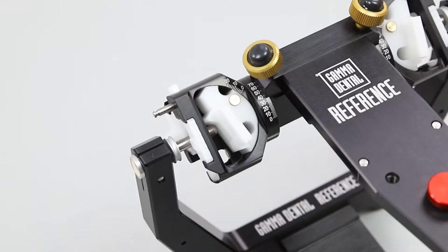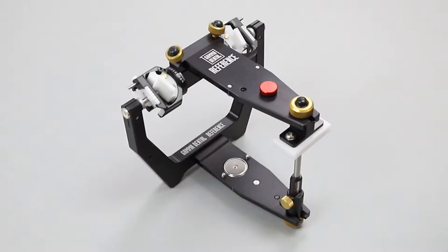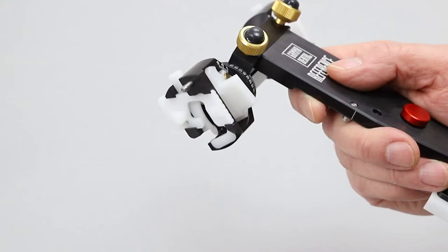Next, we want to focus on the unique and patented condylar housing construction of the Reference SL articulator. In contrary to other articulators, the lower member of the Gamma product is not equipped with a condylar ball. Instead, it is equipped with an axis as a representation of the mandibular hinge axis.